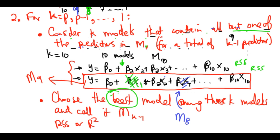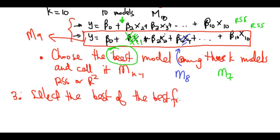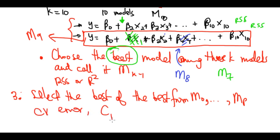The best model is still determined using RSS and R², but the interpretation is: we take the model with the lowest RSS because that is the model where we've removed the most useless variable. After creating M_8 you create M_7, and so on. The third step, just like normal, is to select the best overall model from M_0 up to M_p using cross-validation error, Cp, AIC, BIC, or adjusted R².